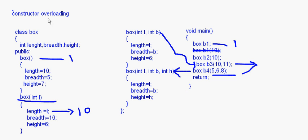This is how constructor overloading works. You should understand the different ways objects can be formed and provide different constructors accordingly — so the programmer can make objects by passing one, two, three parameters, or no parameters at all. This is called constructor overloading, and to implement it you first need to understand parameterized constructors. With that, I come to the end of this topic on constructor overloading. Thank you.